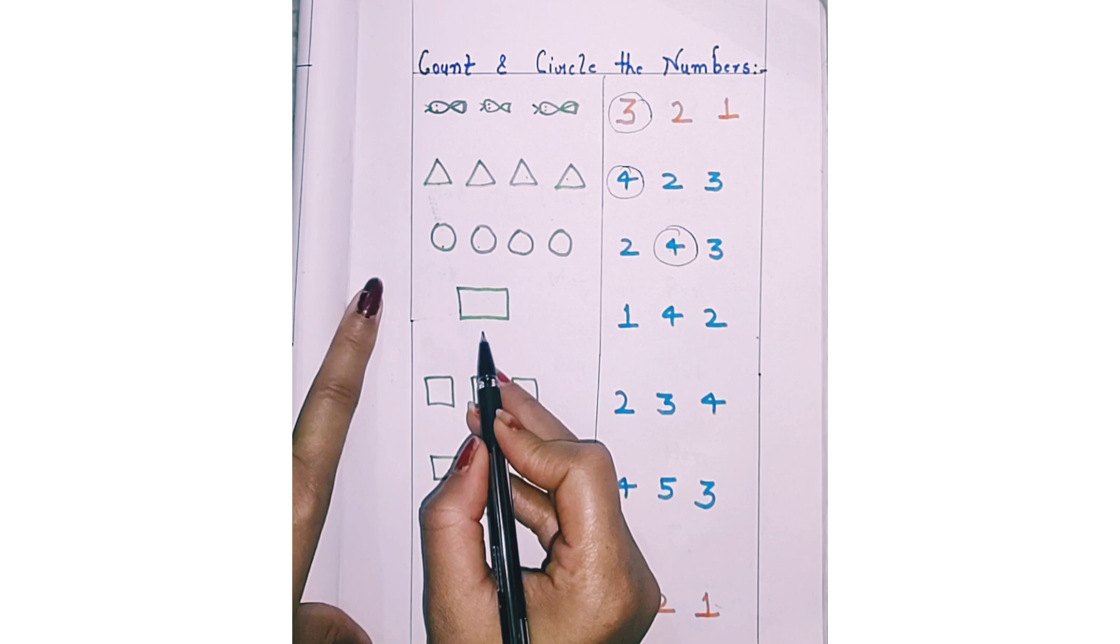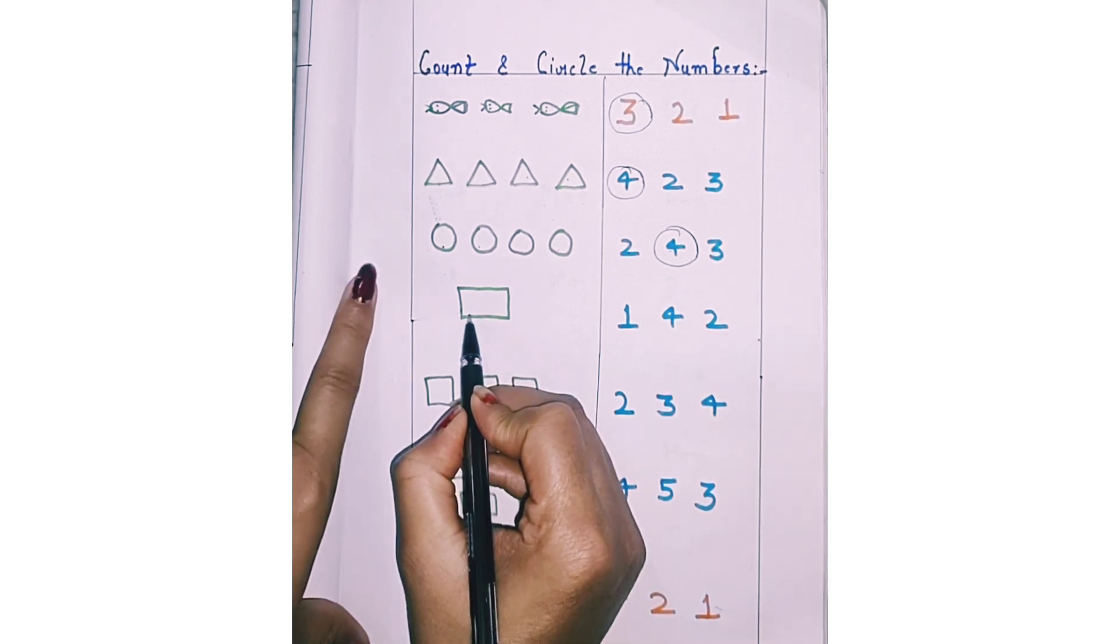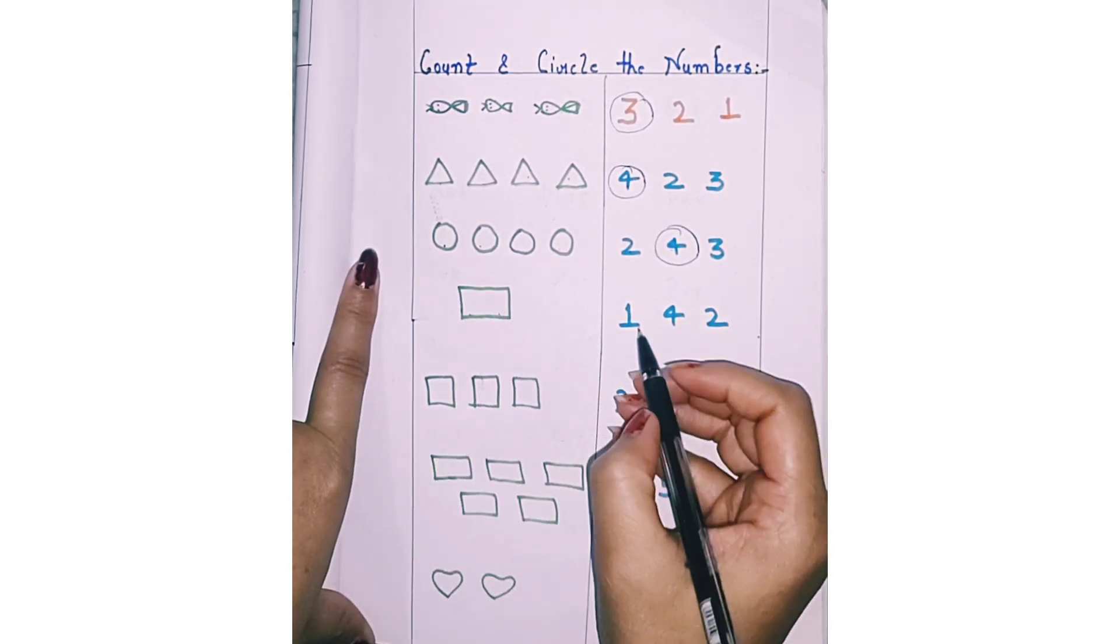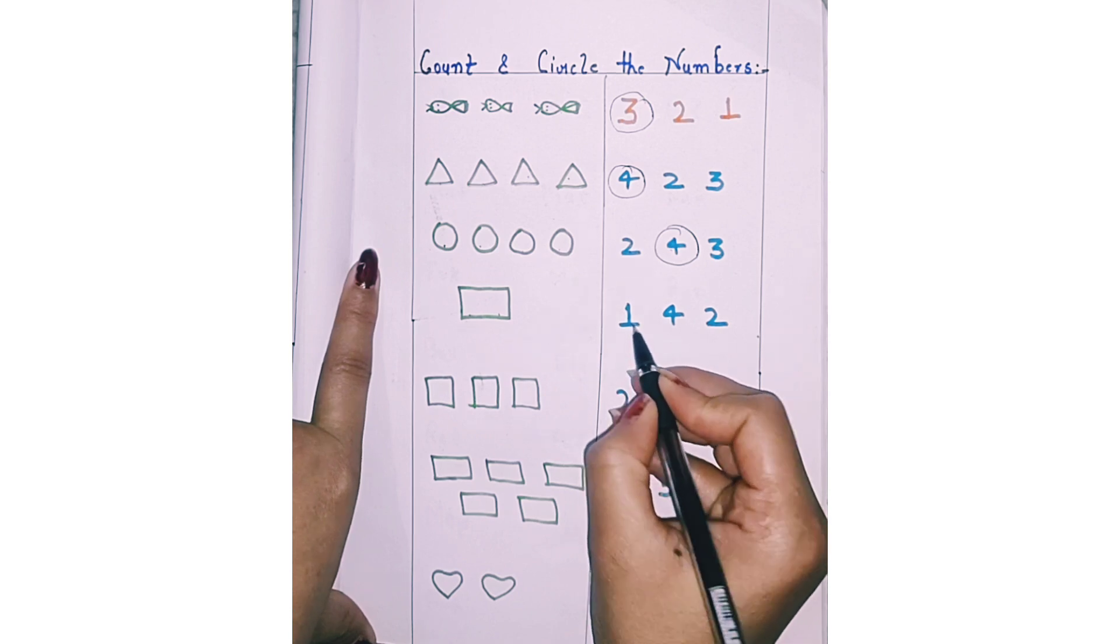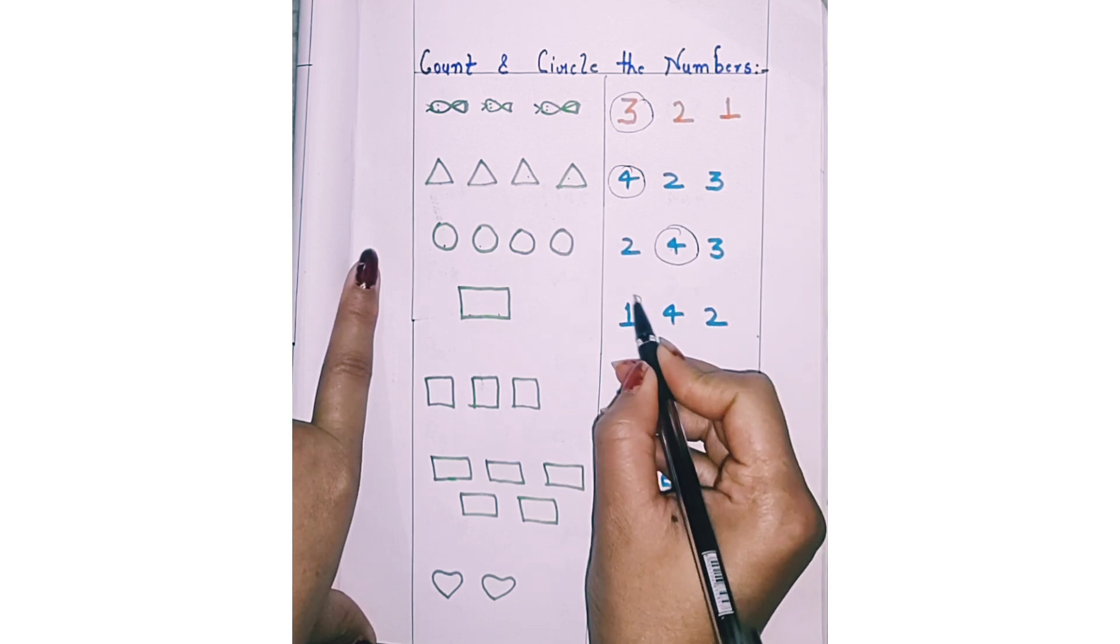Next. How many rectangles are there? 1. Circle 1. 1, 4, 2. Circle 1.